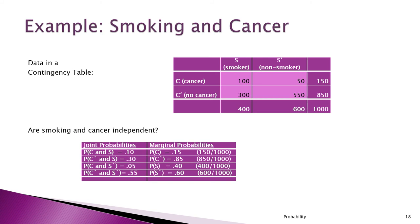In this example, we're looking at a contingency table with smokers, non-smokers, and whether they died of cancer. In a sample of 1,000 people: 100 smokers died of cancer, 300 smokers did not die of cancer — totaling 400 smokers. Among non-smokers, 50 died of cancer and 550 did not, totaling 600 non-smokers.